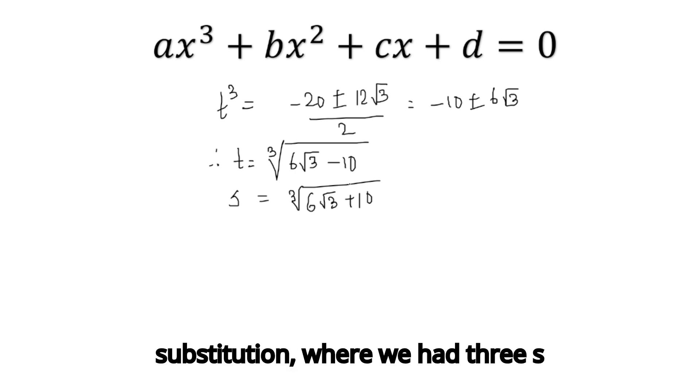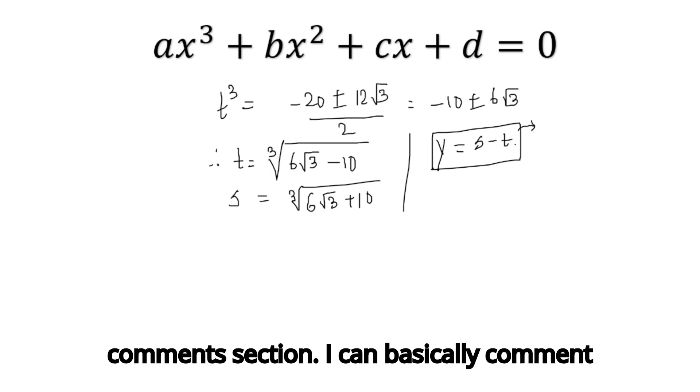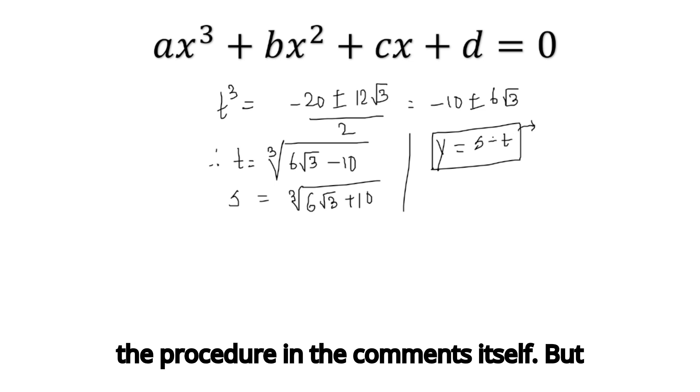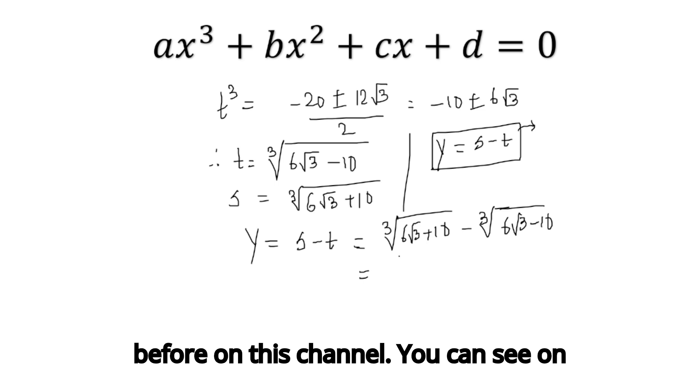We were solving for the value of y, which can be shown to be s - t. This is a fairly simple exercise. If you have any doubts, please let me know in the comment section. The value of y should be s - t, which is ∛(6√3 + 10) - ∛(6√3 - 10). This is a problem I have solved before on this channel, and this evaluates to 2.